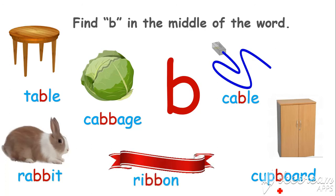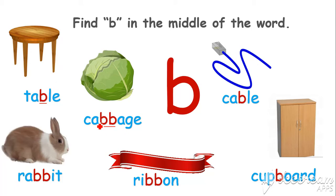Now find B in the middle of the word: table, cabbage, cable, cupboard, rabbit, ribbon. The first word is 'table'. Let's look for the B sound in this word. Yes, here is a B sound — in the middle of the word. Now look at the word 'cabbage'. Let's look for the B sound. Yes, there are two B sounds in the middle of the word 'cabbage'. Good job!